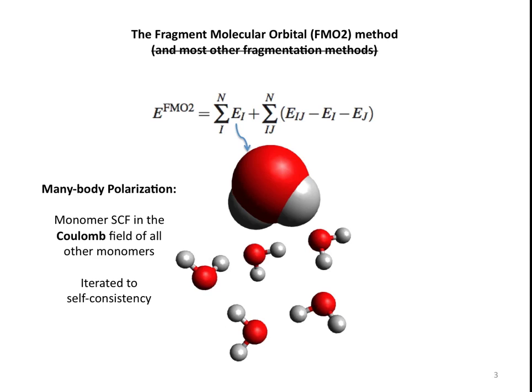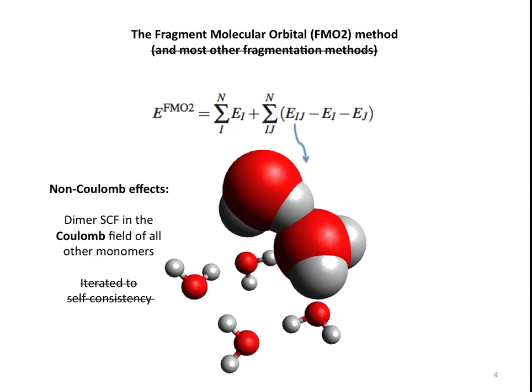Since you only have the Coulomb field in the monomer calculations, you now need to make corrections for short-range effects such as exchange repulsion. To do that, then you do dimer calculations, ab initio, if they're very close. Then you get exchange repulsion, charge transfer, and things like that. This is done again in the Coulomb field of the other molecules, but this is not iterated to self-consistency. This dimer calculation will change the charge density here, but that effect is not included for cost reasons.